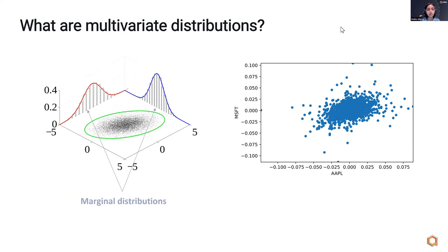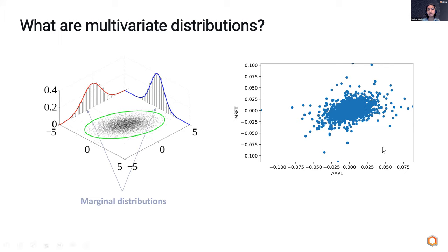Just to visualize this a little bit: on the left I have an example of a two-dimensional Gaussian distribution. If you sample from that distribution, you get points that look like those shown in the middle. If you look at the distribution of each of the individual variables, those are known as the marginal distributions. An example of this is the returns on the stock prices of Microsoft and Apple over an eight-year period — sampling from their joint distribution gives you the picture on the right.